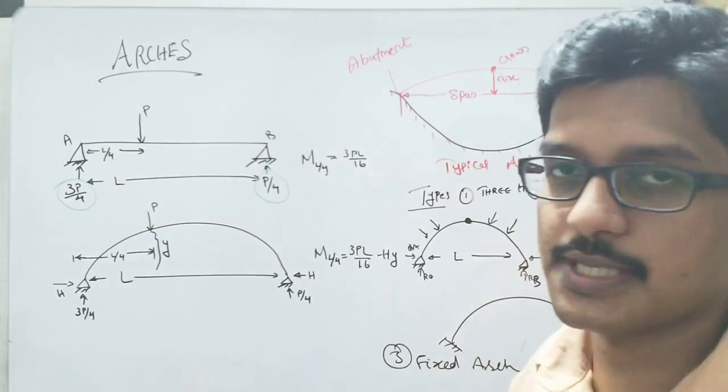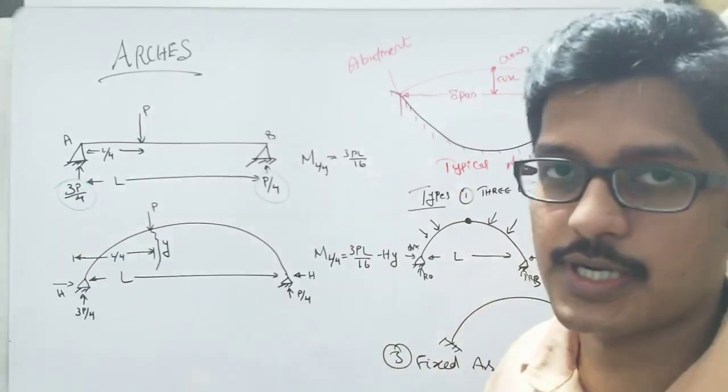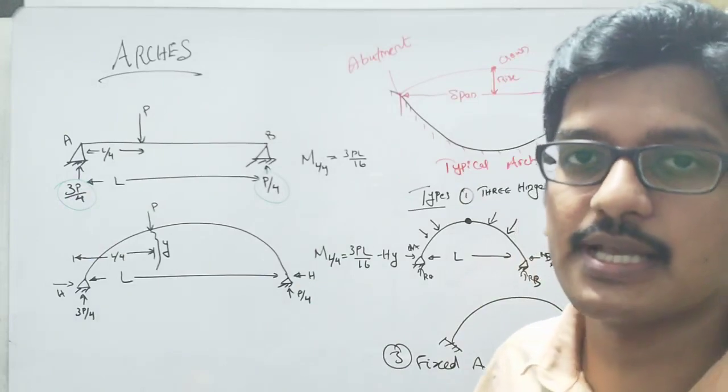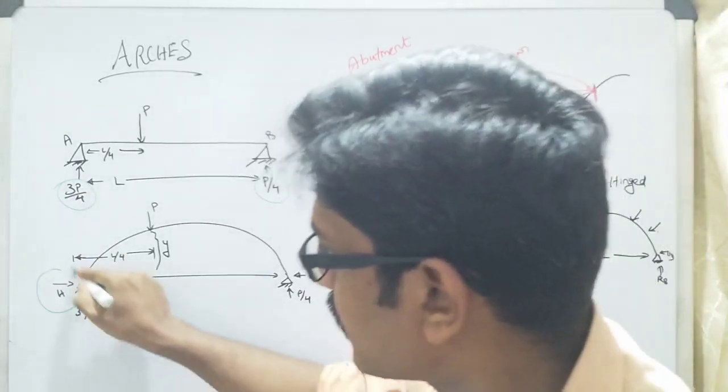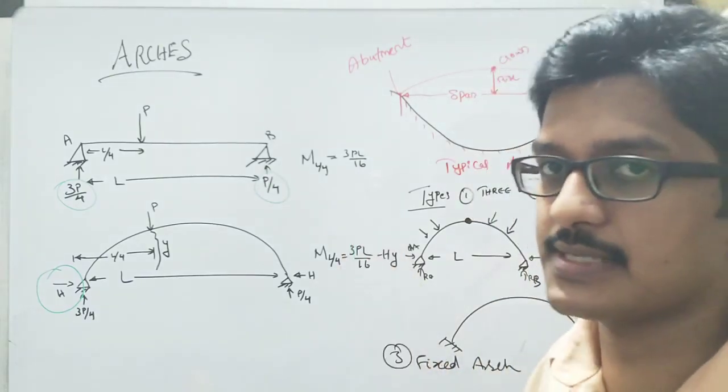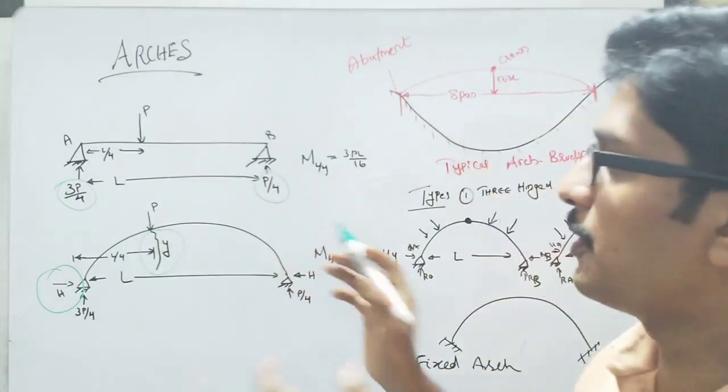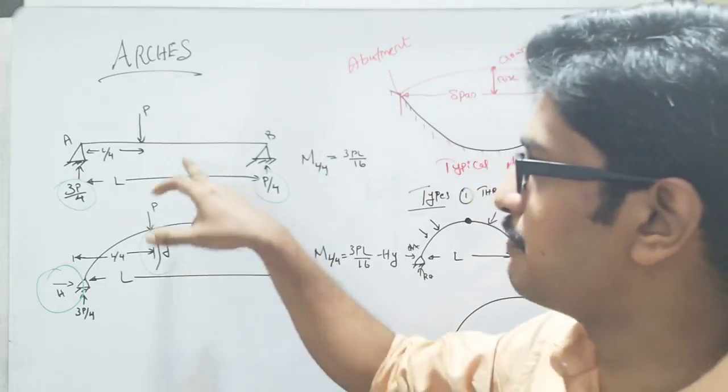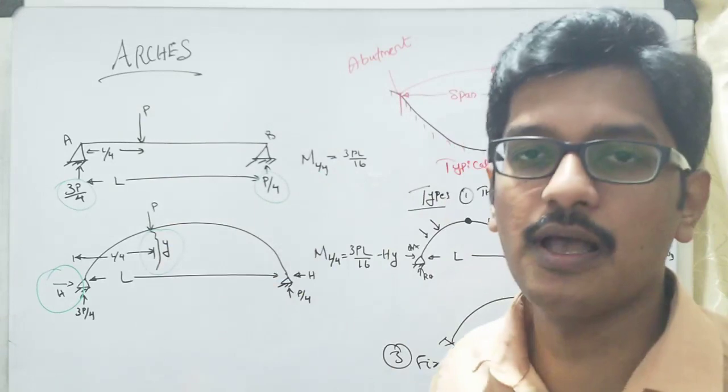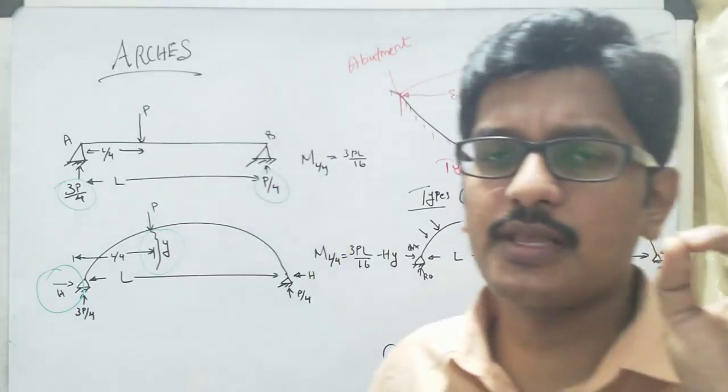If you consider an arch at the same point L by 4 distance where load P is acting, the reactions are similar, 3P by 4 and here P by 4. But in this case there is a horizontal reaction component, so it will reduce to 3PL by 16 minus H into Y, this deflection. In the arch, the bending moment will be reduced compared to the beam.